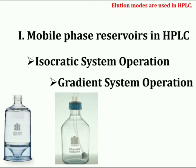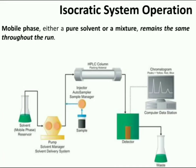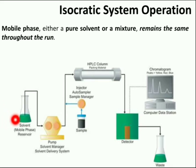Generally two types of techniques are used for handling the mobile phase: first, isocratic system operation, and second, gradient technique. Isocratic means that the mixture of your mobile phase is consistent over the complete testing time — the mobile phase, either a pure solvent or a mixture, remains the same throughout the run.